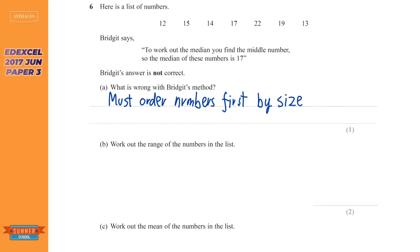Now work out the range of the numbers. Range is the biggest take away the smallest. The biggest number is 22 and the smallest is 12, so we do 22 take away 12, and that gives us 10.